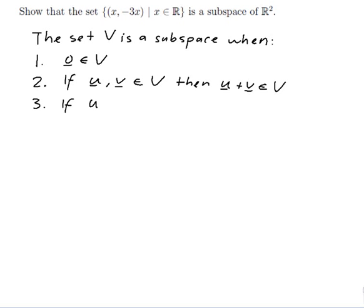3. If u is in V and c is in ℝ, then cu is in V. And that's called being closed under scalar multiplication.